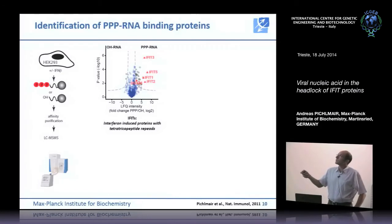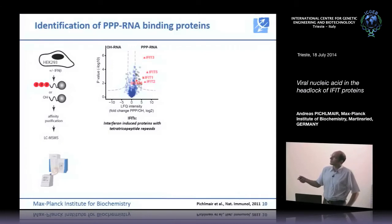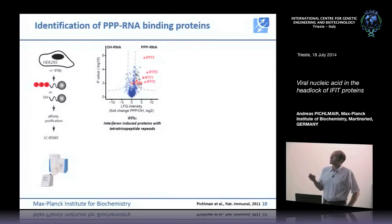Comparing the two conditions — 5' OH RNA and 5' PPP RNA — there is an entire family of proteins highly enriched in the PPP RNA precipitates compared to 5' hydroxylated RNA. These proteins are called interferon-induced proteins with tetratricopeptide repeats, or IFIT proteins. At the time we identified them, these proteins were barely studied.